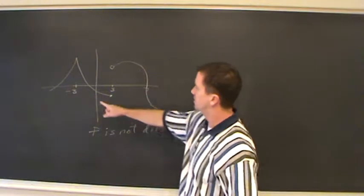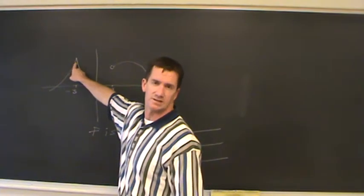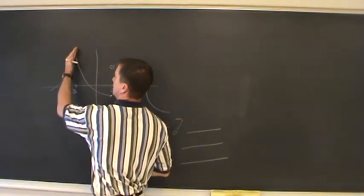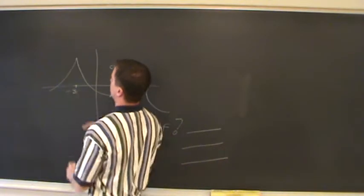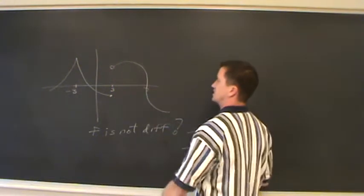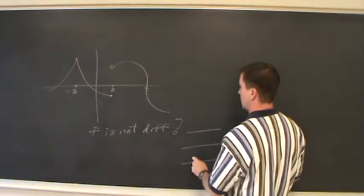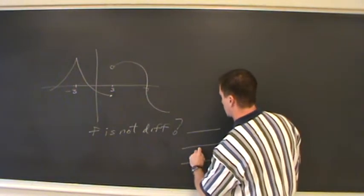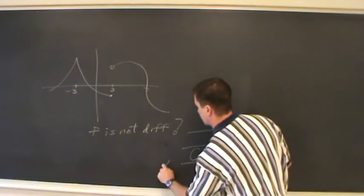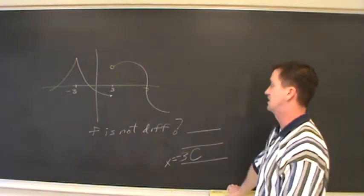This is called a cusp — kind of like a corner. The slope coming from the left side is getting really steep, almost undefined, and these slopes are not matching as you approach from the left and right. This function is not differentiable at what's called a corner or cusp, so definitely not at x equal to negative three. That's one place where this function is not differentiable.